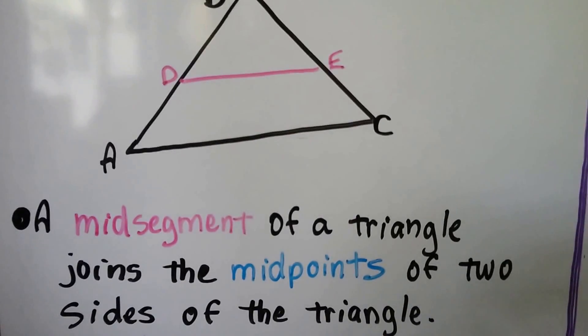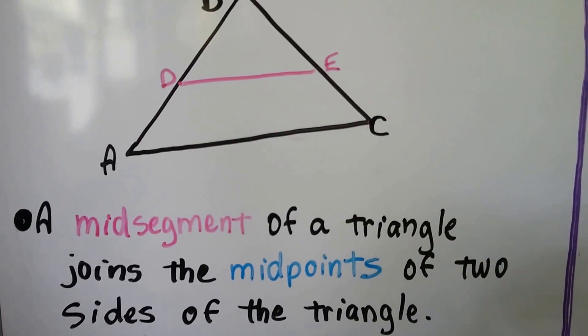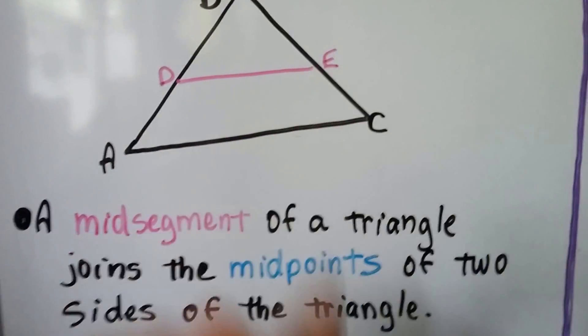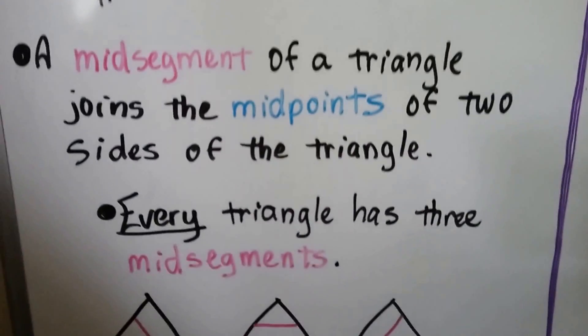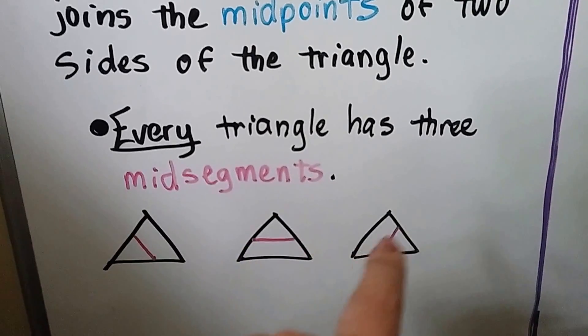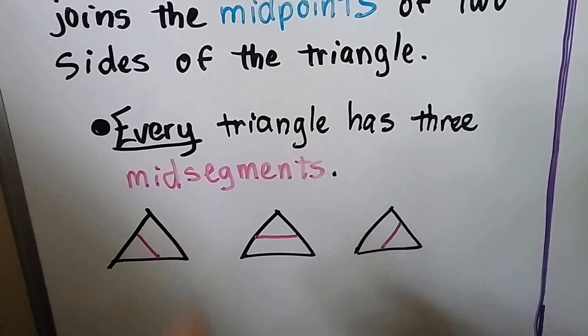We learned in the last video a mid-segment of a triangle joins the midpoints of two sides of the triangle. This side and this side. And every triangle has three mid-segments: one going this way, this way, and this way. And they're parallel to a side, aren't they?